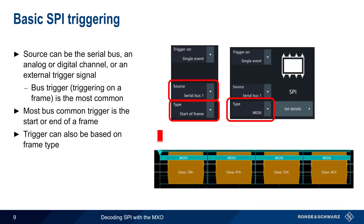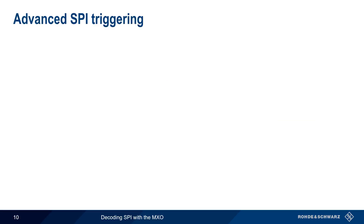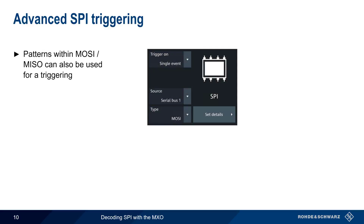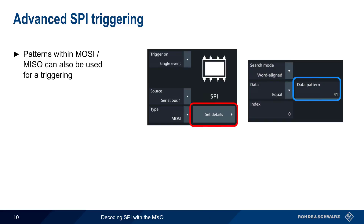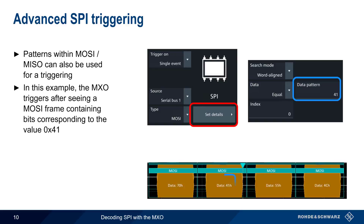For example, we can configure the MXO to trigger — that is, to begin an acquisition — whenever it sees a MOSI frame. In addition to basic frame triggering, the MXO also supports triggering on patterns within MOSI or MISO frames. This is configured using 'Set Details,' where we can define data patterns, matching criteria, and offsets in order to trigger on frames containing a given pattern at a given location. For example, the MXO trigger can occur after a MOSI frame containing data with a value of 0x41. The MXO can also trigger on a sequence of events — please see the user documentation for more details on configuring a sequence-based trigger.